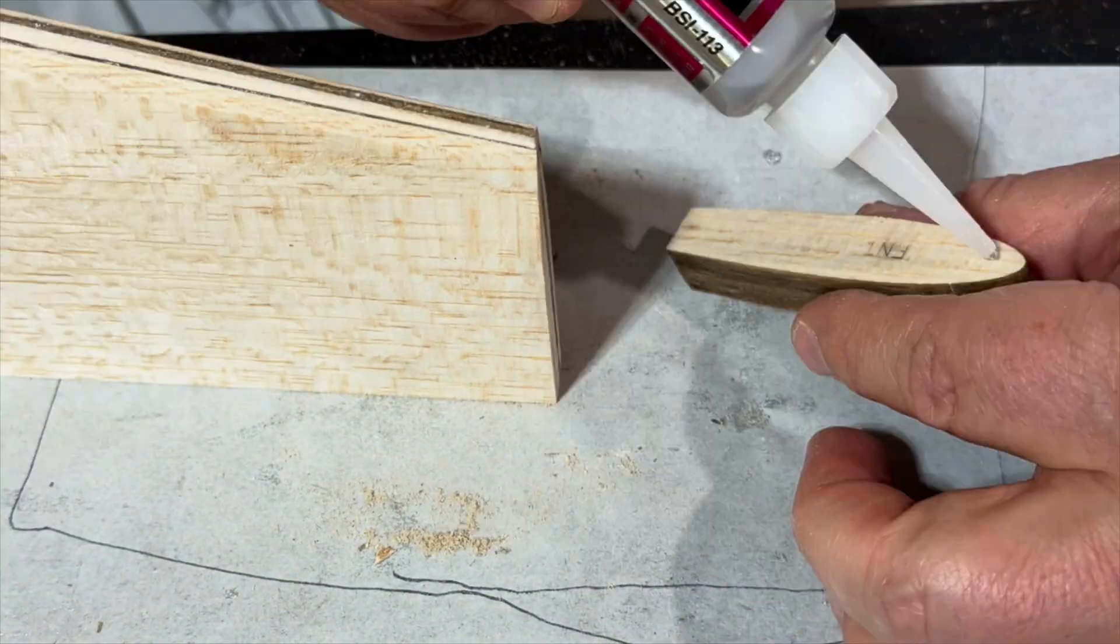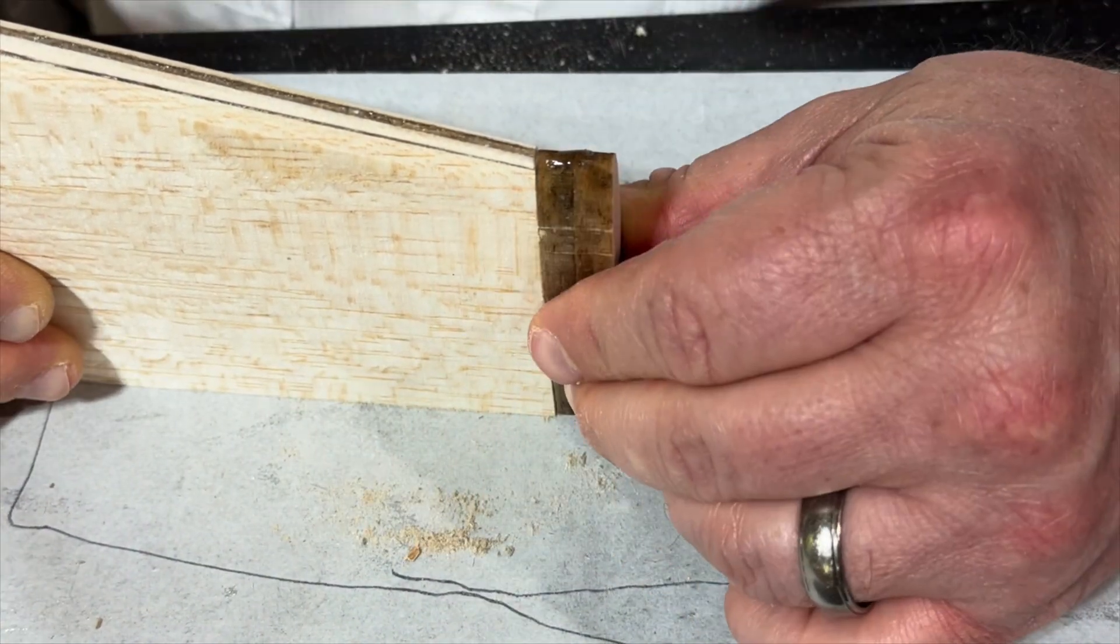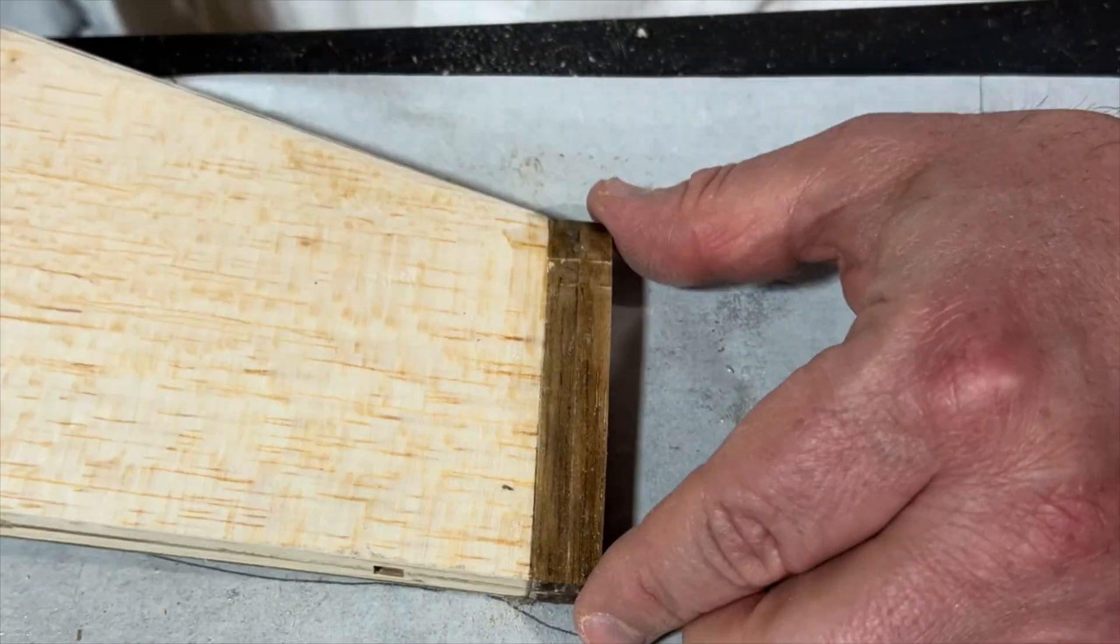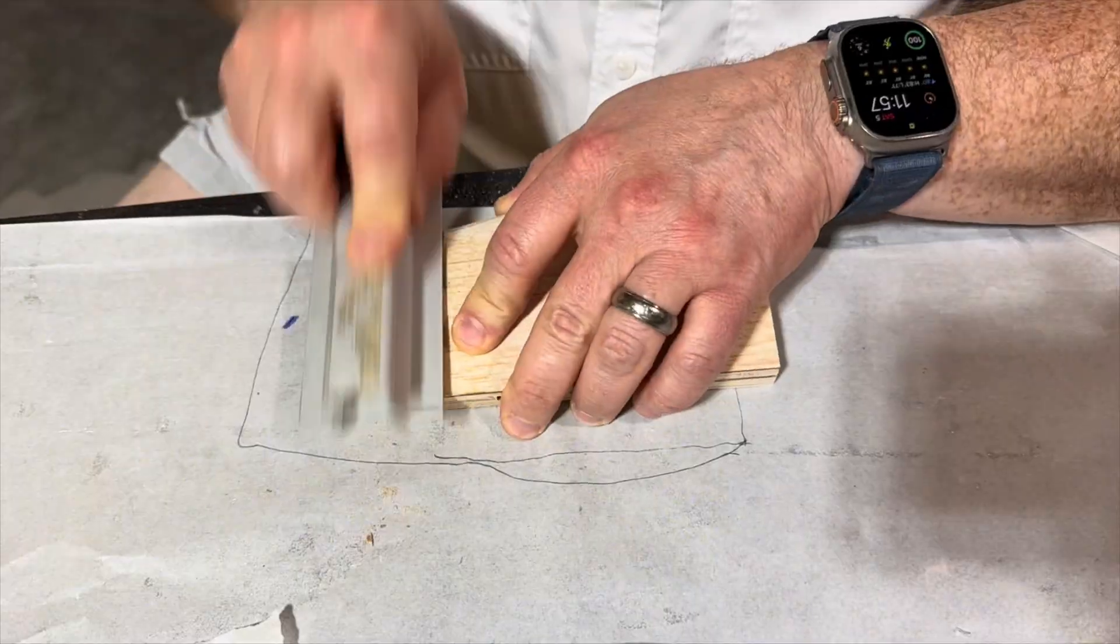So these are the vertical stabilizer end pieces. They get glued in place and, of course, they're shaped just like the end pieces for the horizontal stabilizer.